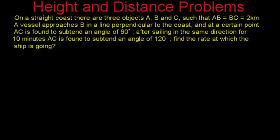Here we have one more problem based on height and distance. The problem statement says: on a straight coast there are three objects A, B and C such that AB is equal to BC is equal to two kilometers.